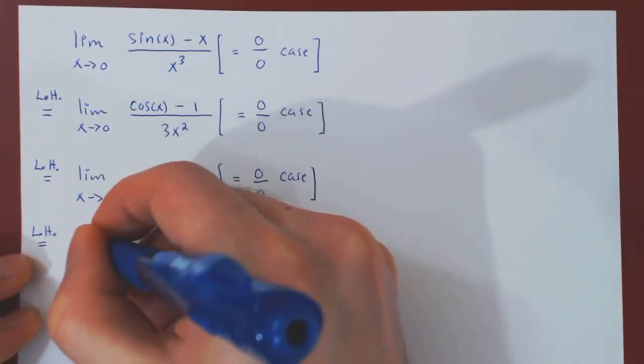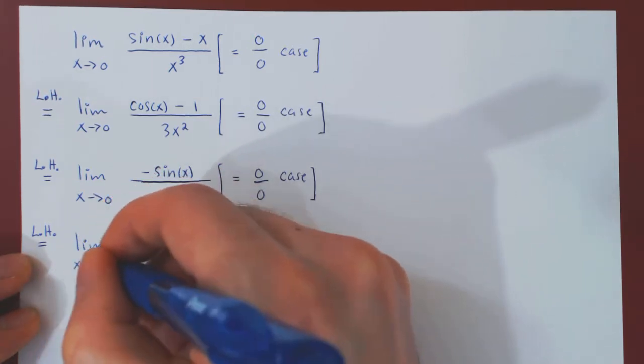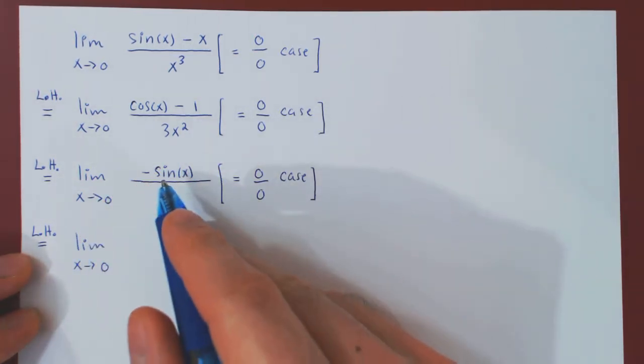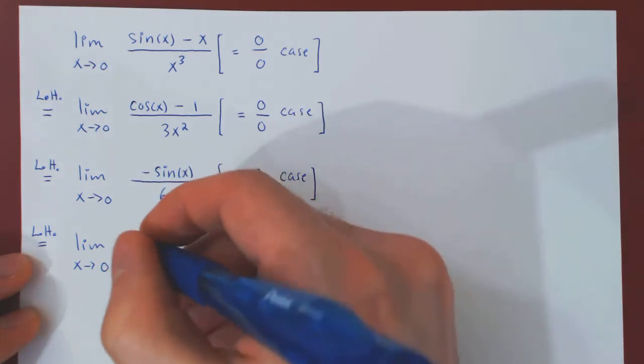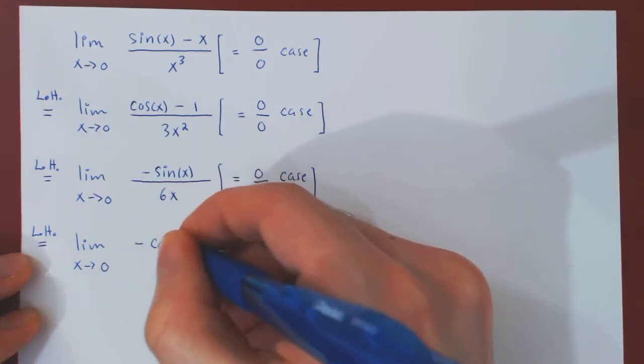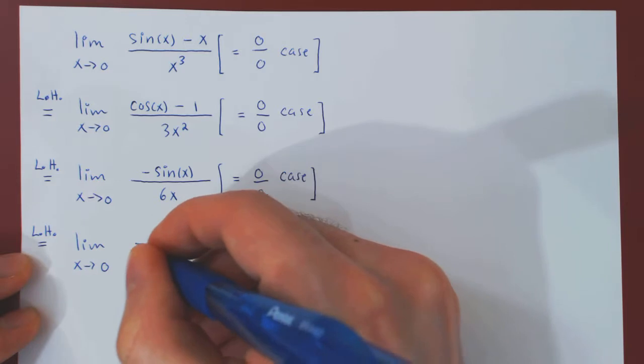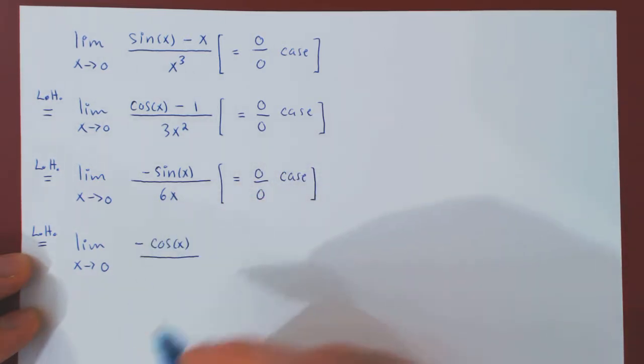The limit stays the same. The derivative of sin is cosine, so this will become negative cosine, over the derivative of 6x, which is simply 6.